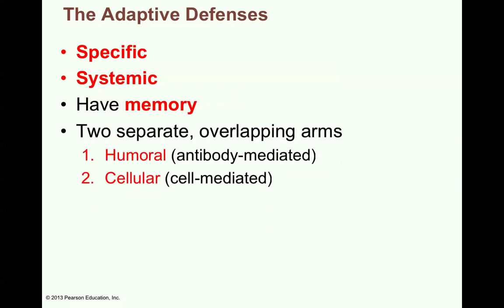There are two separate but overlapping arms. One is called humoral — referring to chemicals in the bloodstream. Antibodies are proteins produced by body cells that are sent out into the bloodstream and can go anywhere in the body. The humoral or antibody-mediated side of the adaptive defense is initiated and carried out by B cells, and then you have the cellular or cell-mediated branch by the T cells.